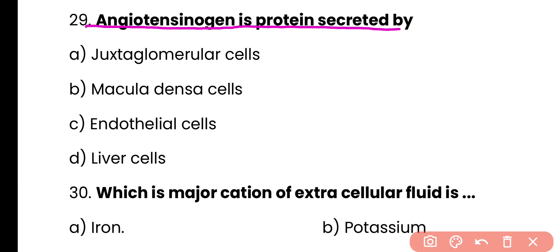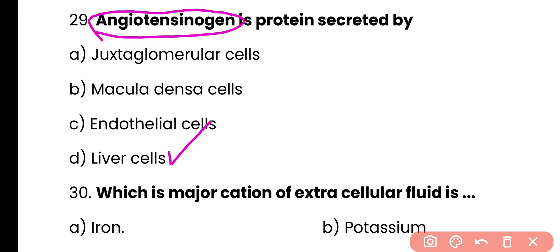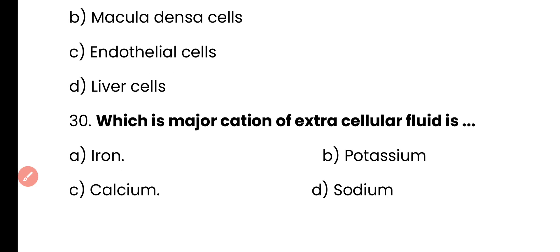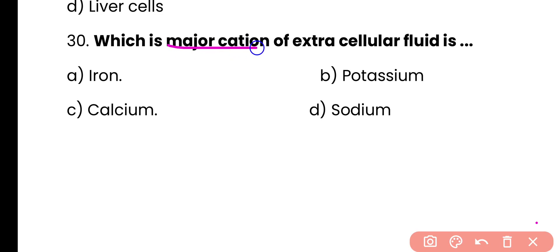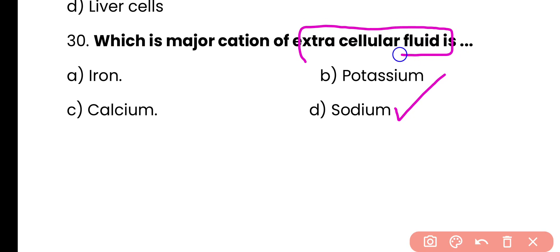Question 29: Angiotensinogen is a protein secreted by — juxtaglomerular cells, macula densa cells, endothelial cells, or liver cells. Correct answer is option D — angiotensinogen is a plasma protein produced by the liver in circulation, and it is a substrate for the enzyme renin, which is produced by the kidney. Question 30: Which is the major cation of extracellular fluid — iron, potassium, calcium, or sodium? Correct answer is option D — the main cation of extracellular fluid is sodium, while the main anion is chlorine. The main cation of intracellular fluid is potassium.